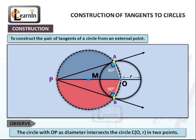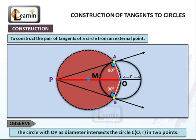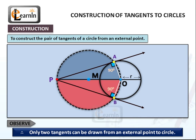Observe: The circle with OP as diameter intersects the circle C in two points. Therefore, only two tangents can be drawn from an external point to a circle.